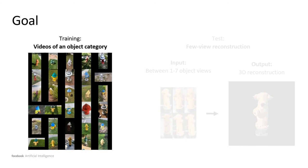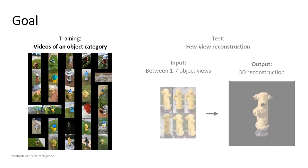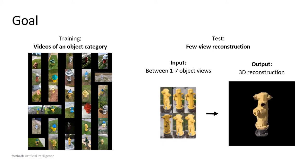Given object-centric videos of a specific category, our goal is to train a deep neural network that at test time is able to reconstruct a 3D shape and appearance from one or multiple images.